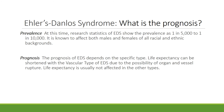So what is the outcome or prognosis for these individuals? Research statistics show the prevalence of EDS is 1 in 5,000 to 1 in 10,000. It is known to affect both males and females of all racial and ethnic backgrounds. The prognosis depends on the specific type. Life expectancy can be shortened with the vascular type of EDS due to the possibility of organ and vessel rupture, but life expectancy is usually not affected in the other types.